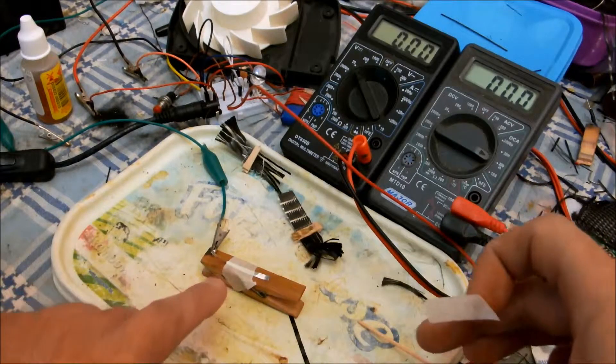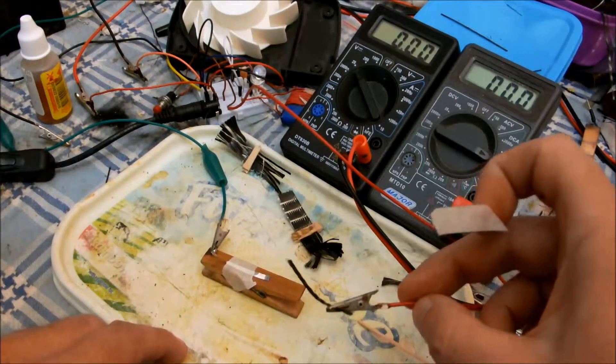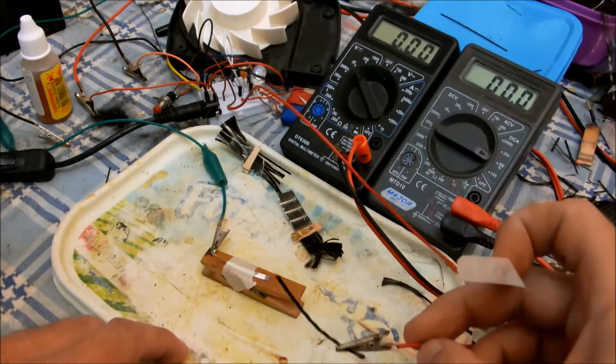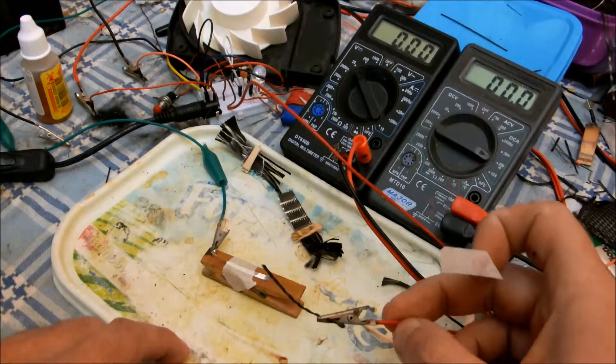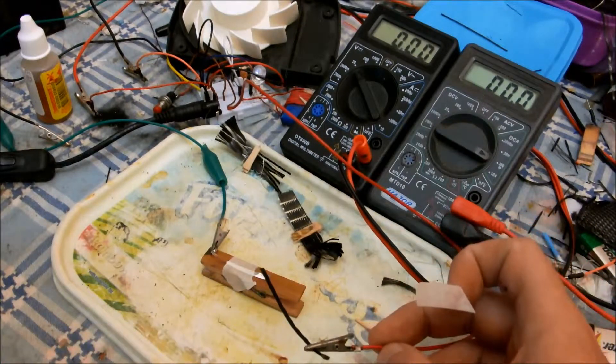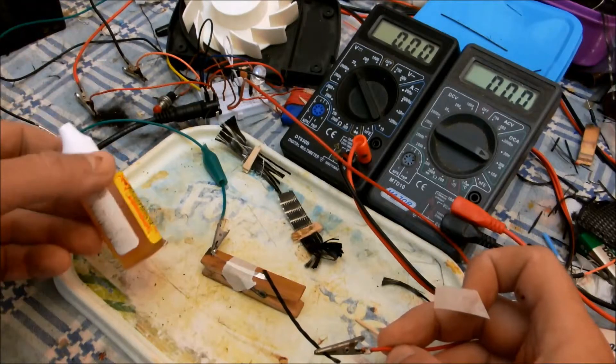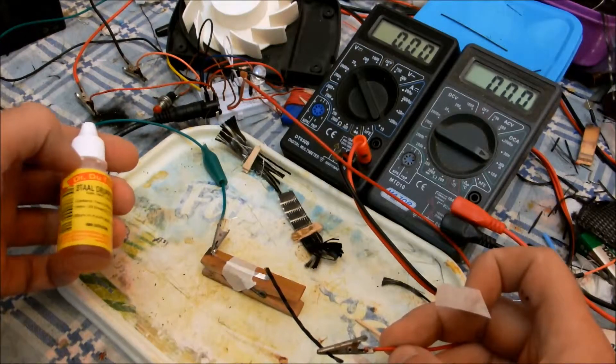We've got an aluminum electrode and carbon and an electrolyte and what I want to show is how potent this particular combination is with ferric chloride as an electrolyte.